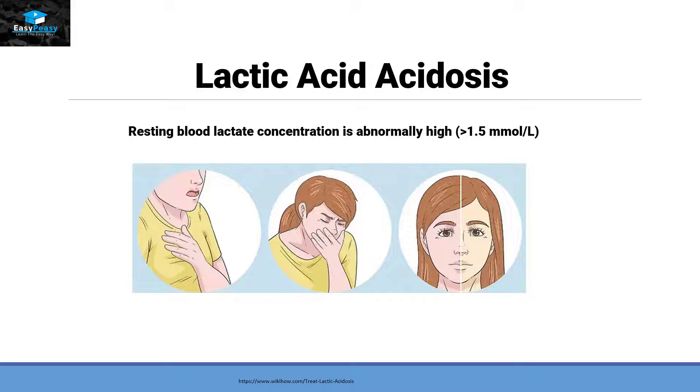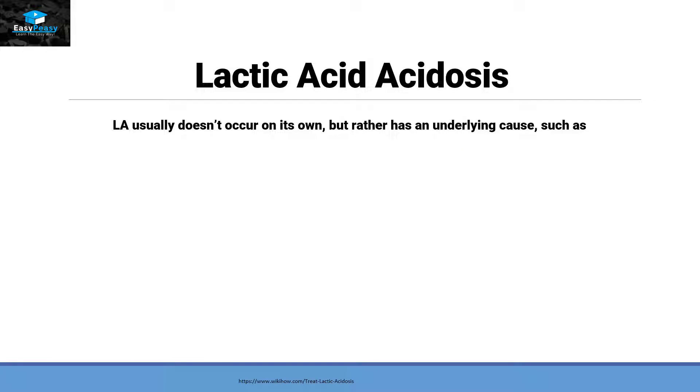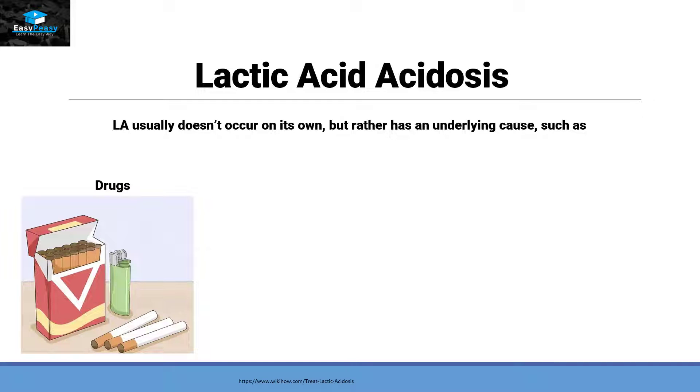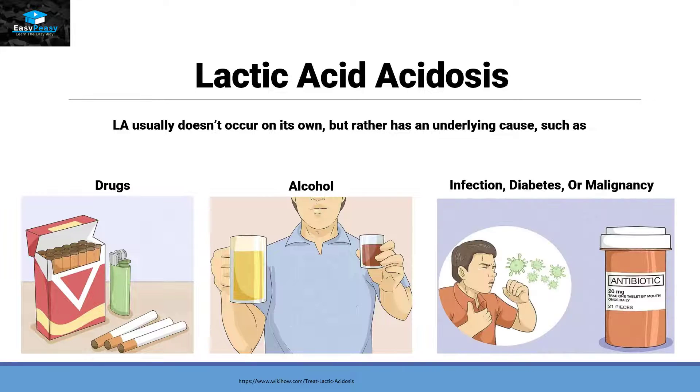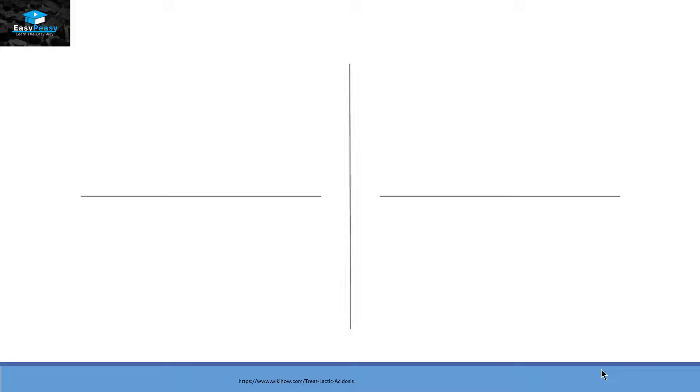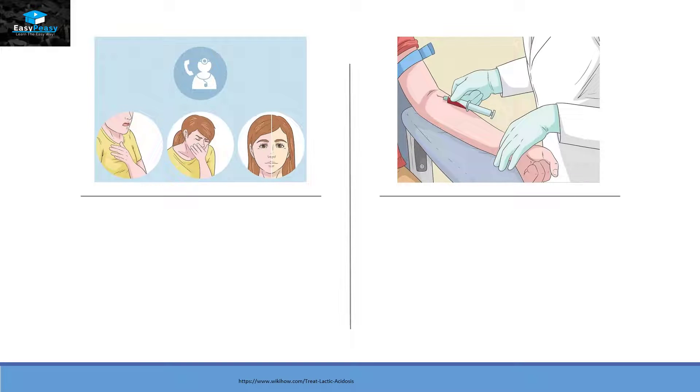The symptoms are weak muscle, rapid breathing and heart rate, and fatigue. It can also cause nausea, vomiting, or jaundice. Sometimes lactic acidosis does not occur on its own but rather has an underlying cause such as drugs, alcohol, infection, diabetes, or any other kind of malignancy. If anyone has all those symptoms of lactic acidosis then you should call 911 for emergency.